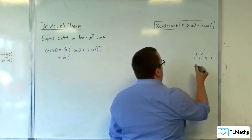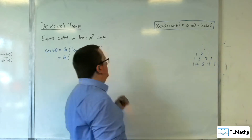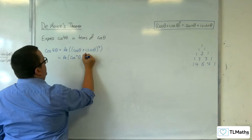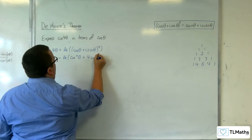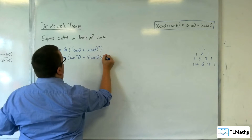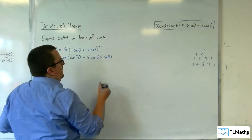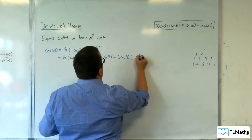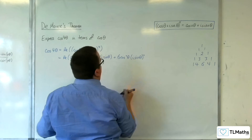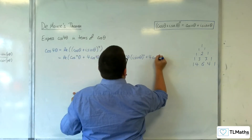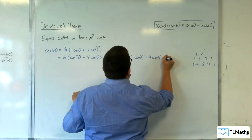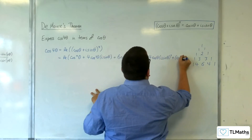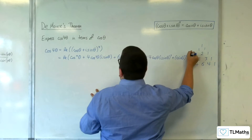So next row: 1, 4, 6, 4, 1. So we're going to have cosine to the 4 theta plus 4 cosine cubed theta times i sine theta, plus 6 cosine squared theta times i sine theta squared, plus 4 cosine theta times i sine theta cubed, plus i sine theta to the power of 4.